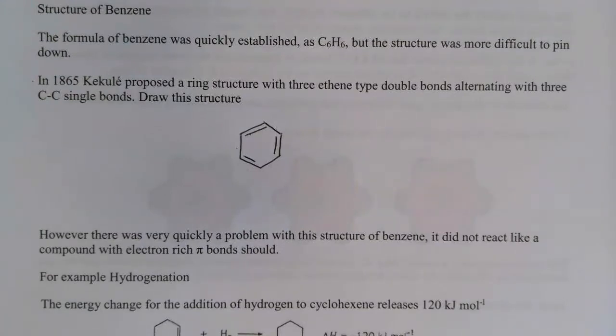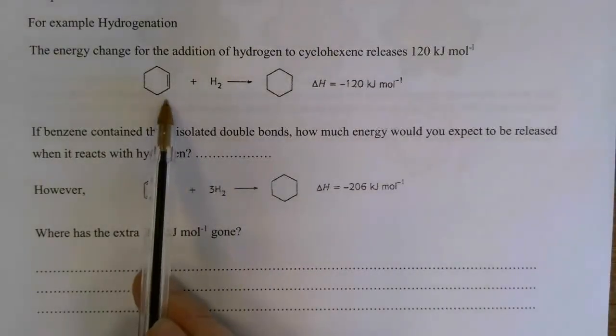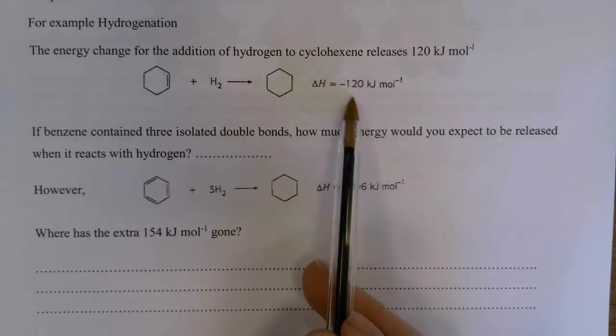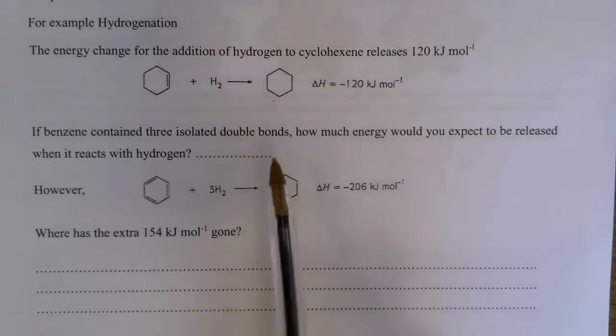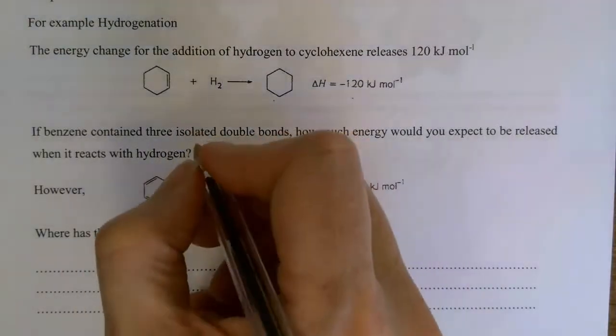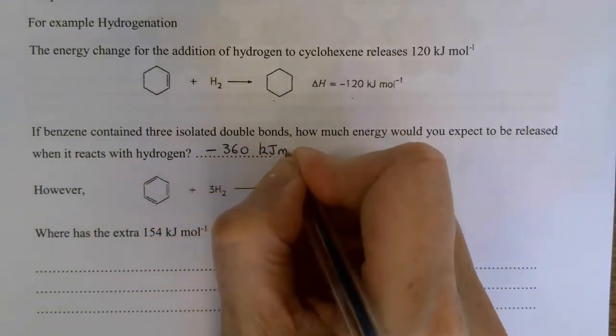However, there is very quickly a problem with this structure of benzene, and that was firstly noticed in its reactions with hydrogen. It didn't react in the way a compound with three electron-rich double bonds should react. When we take cyclohexene and react it with hydrogen to make cyclohexane, that releases 120 kilojoules of energy per mole of cyclohexene. So you'd expect with three double bonds in benzene you would get three times that amount, so you should get minus 360 kilojoules of energy being released per mole.